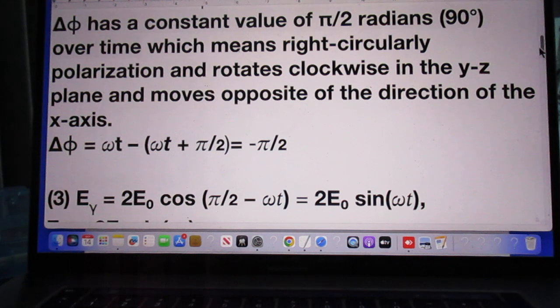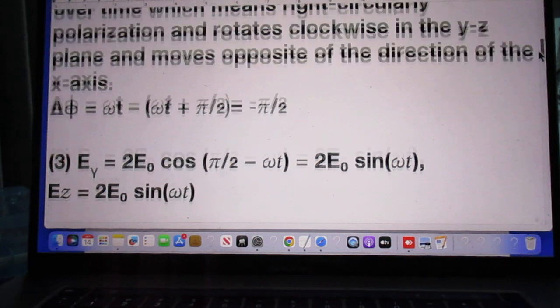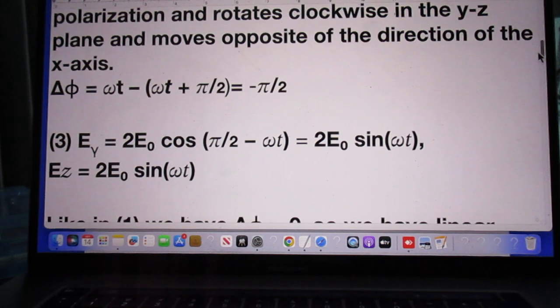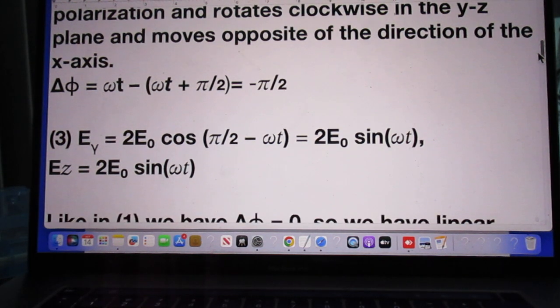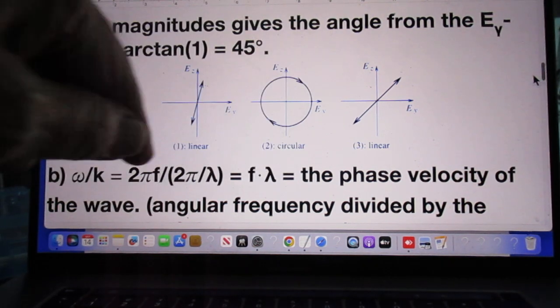So this means that we're dealing here with right circular polarization. Rotates clockwise in the YZ plane and moves opposite the direction of the x-axis. I will show you my solution in blue. So this is Ulf's solution number two, right here, circular polarized.